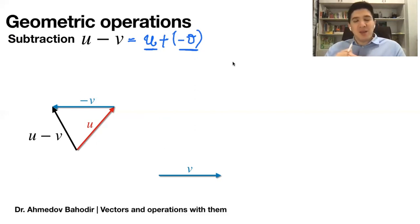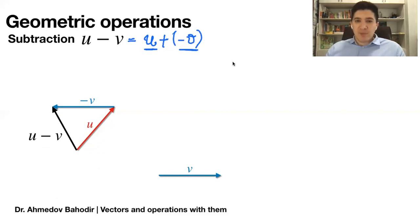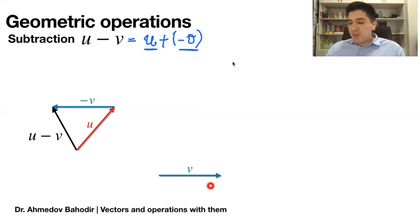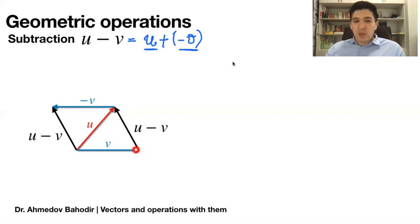This method requires extra work — every time I subtract two vectors I need to create another vector with opposite direction and then add them. There is an easier method. If I have u and v and want to figure out u minus v without constructing minus v — it is possible. In order to do this, we need to place both vectors from the same point. When adding vectors you place the second at the end of the first; for subtraction, you put both from the same starting point, and the connection of the ending points is going to be their subtraction — u minus v.